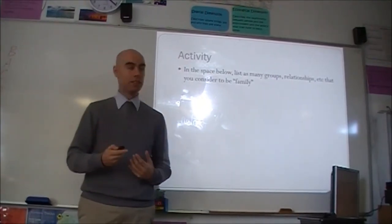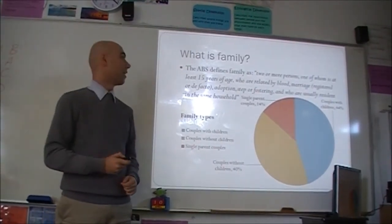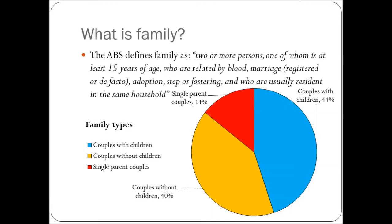Now, the actual legal definition is a little bit different. The ABS actually has a proper definition for it. And that is, two or more persons, one of whom is at least 15 years of age, who are related by blood, marriage, adoption, step, or fostering, and who are usually resident in the same household. So there's an actual definition.